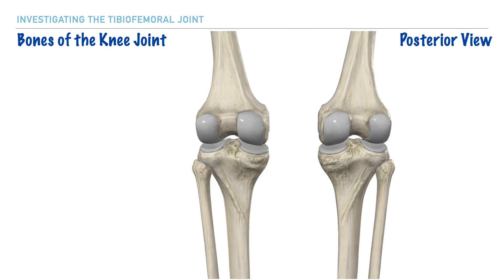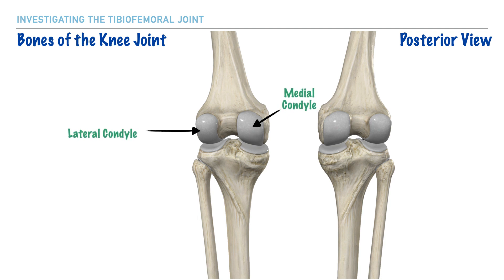Now let's take a look at the posterior aspect of the knee. We'll be labeling some of the same structures seen anteriorly, though viewing them this way gives us a better appreciation of the knee's structure. First, we have the medial and lateral femoral condyles. In between these on the posterior aspect is the intercondylar fossa. Just inferior to this are the medial and lateral tibial condyles.